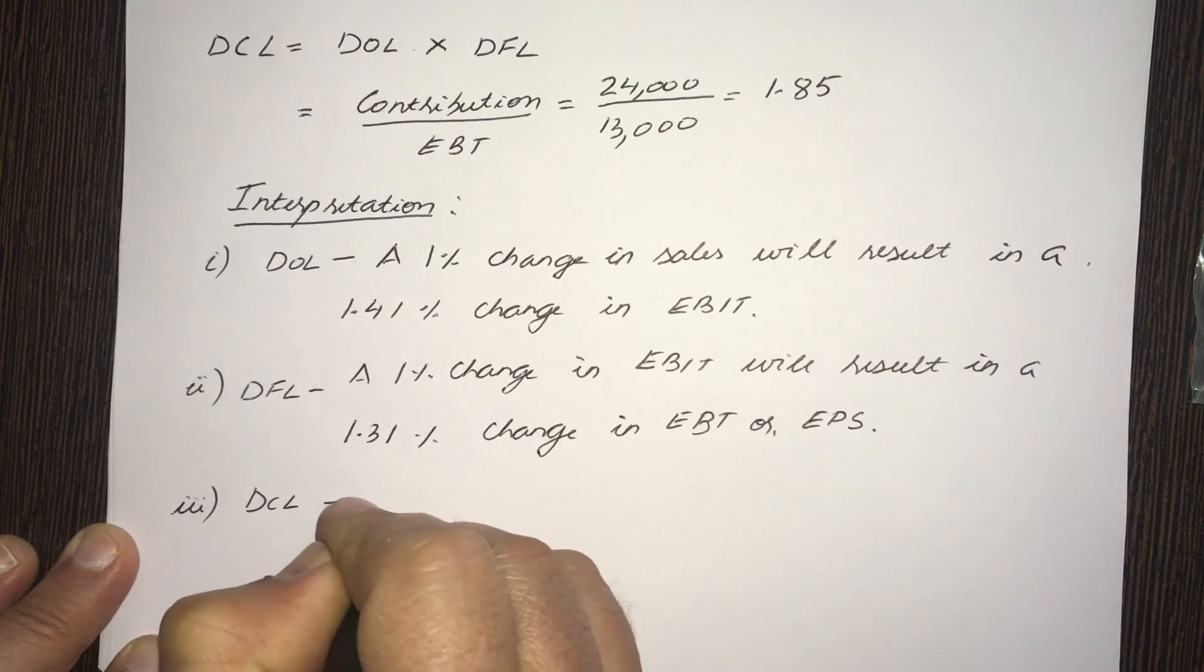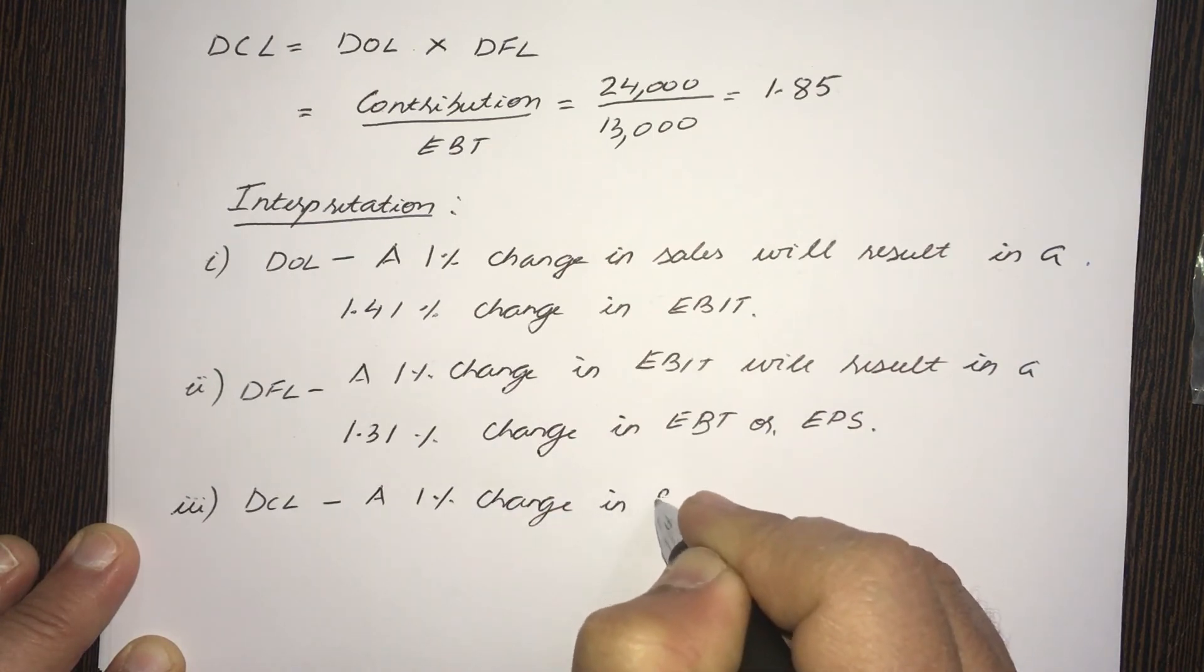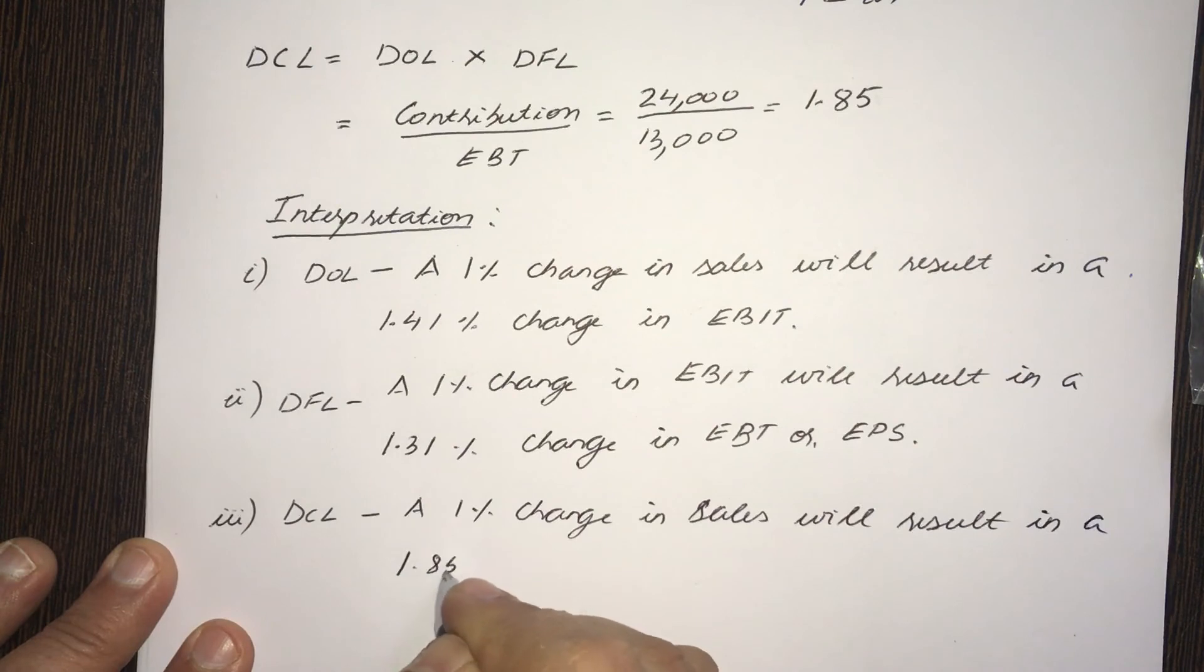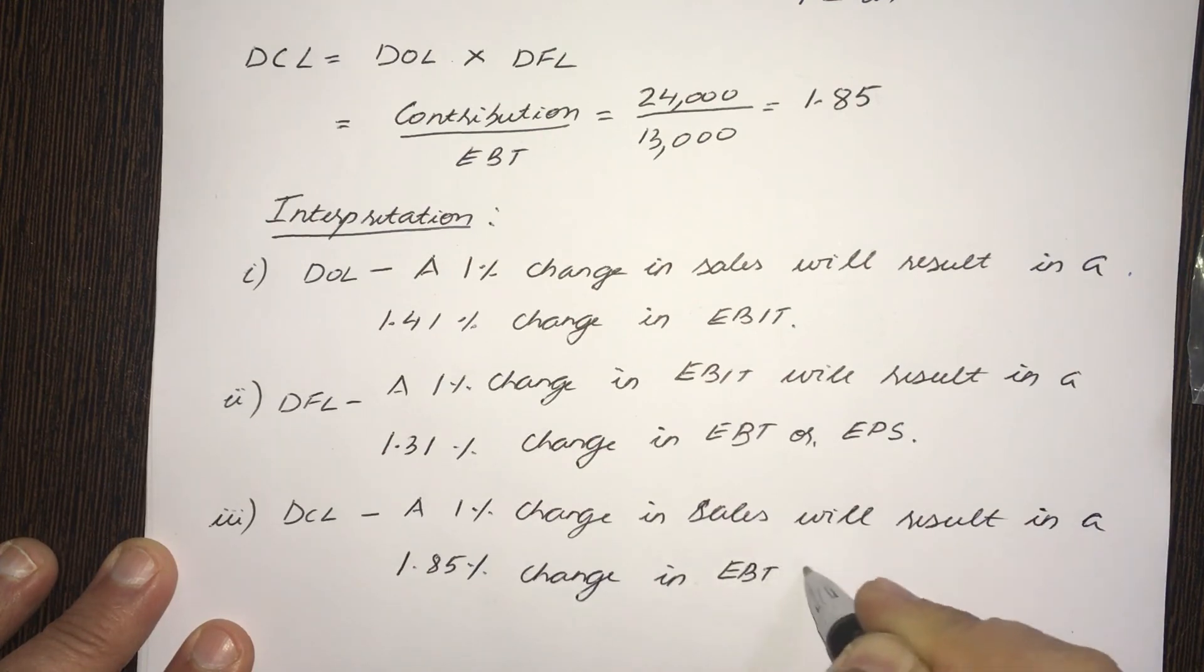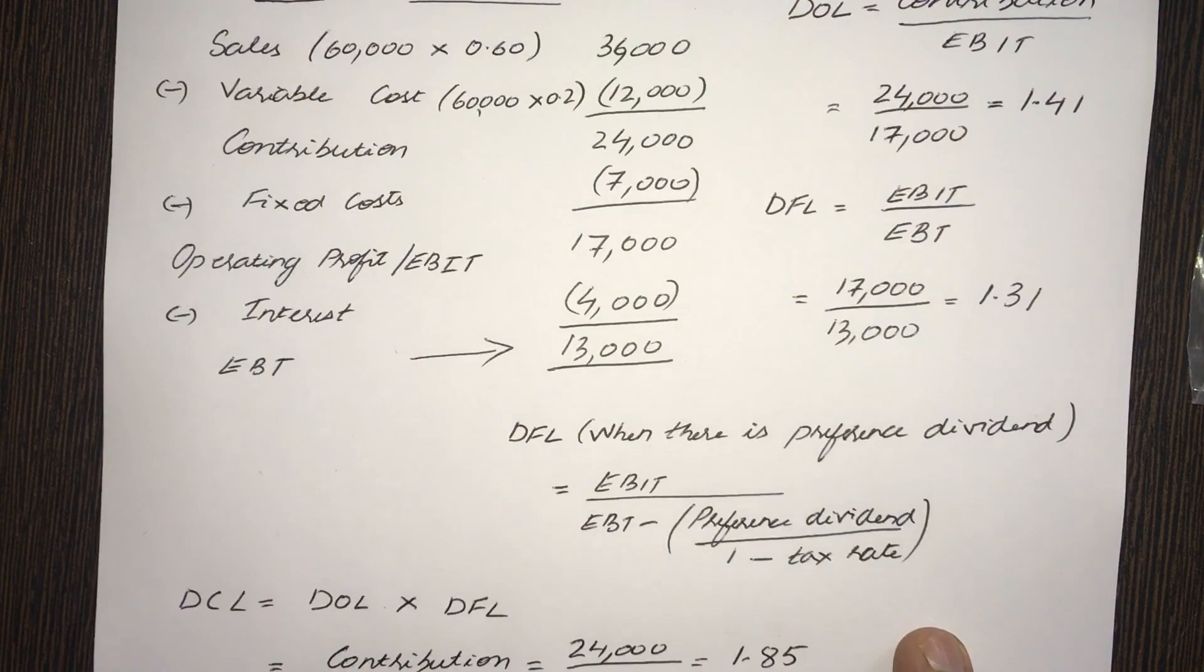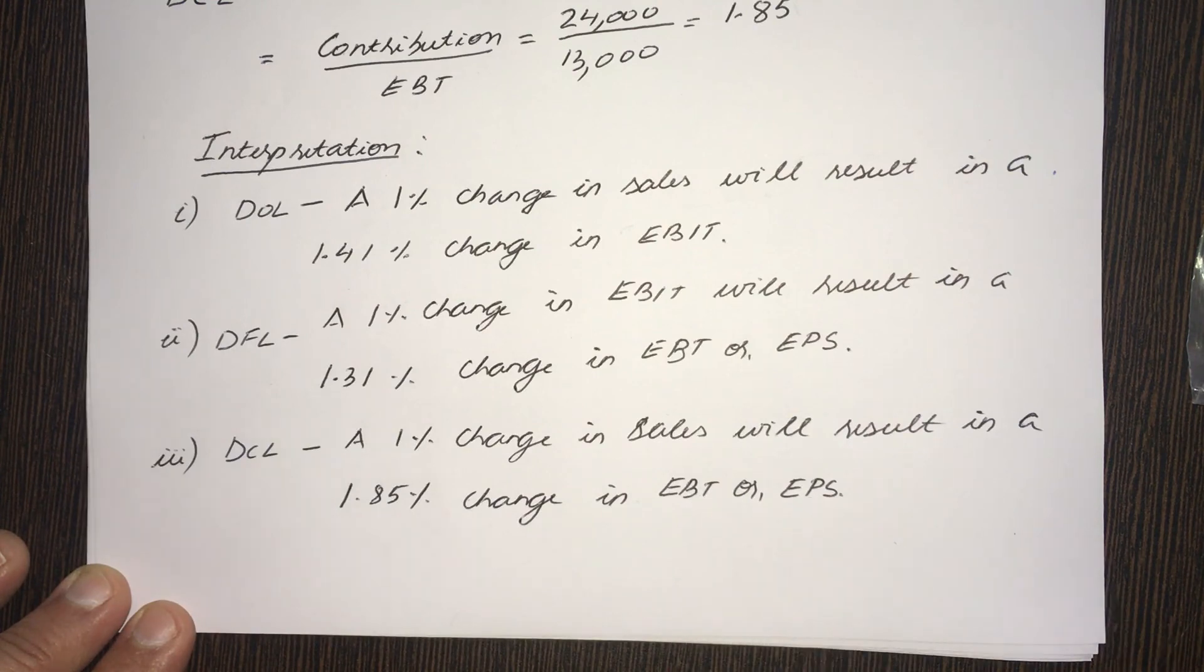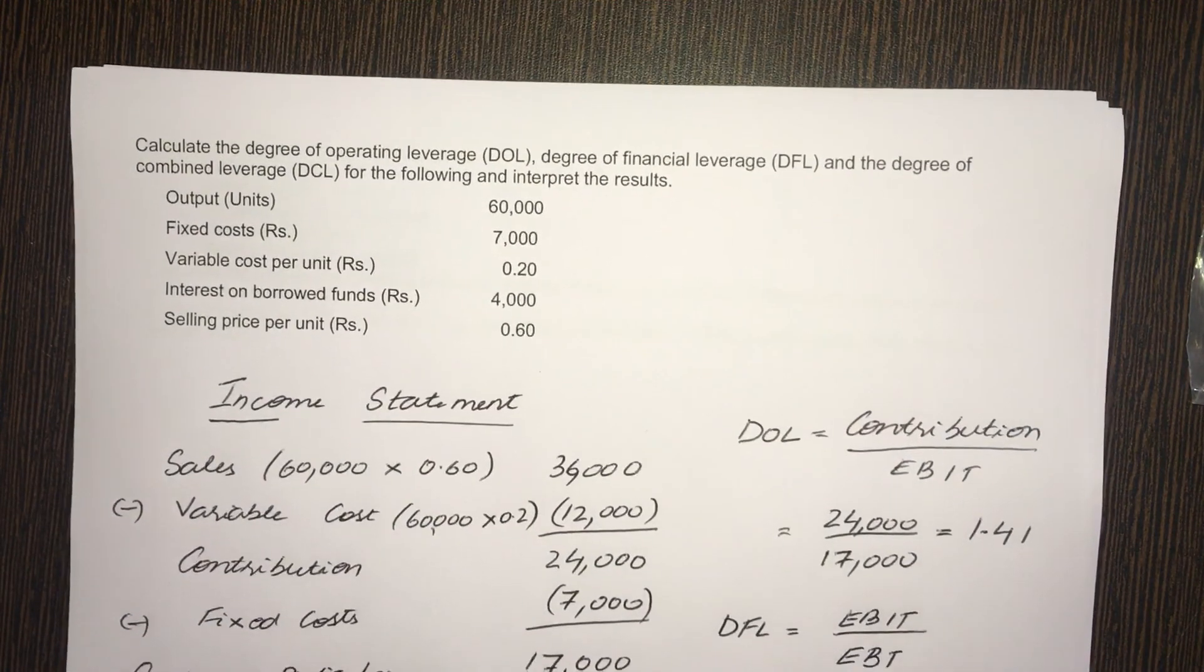And DCL, degree of combined leverage. A 1% change in sales will result in... What is DCL? 1.85. So, 1.85% change in EBT or EPS. In this problem, we ignore EPS because there is no preference dividend. There's no taxes. But in case you have a problem where there's earnings per share, the EBT will be substituted by EPS. So, this is how you solve a leverage problem, finding out the DOL, DFL, DCL and interpreting the results.